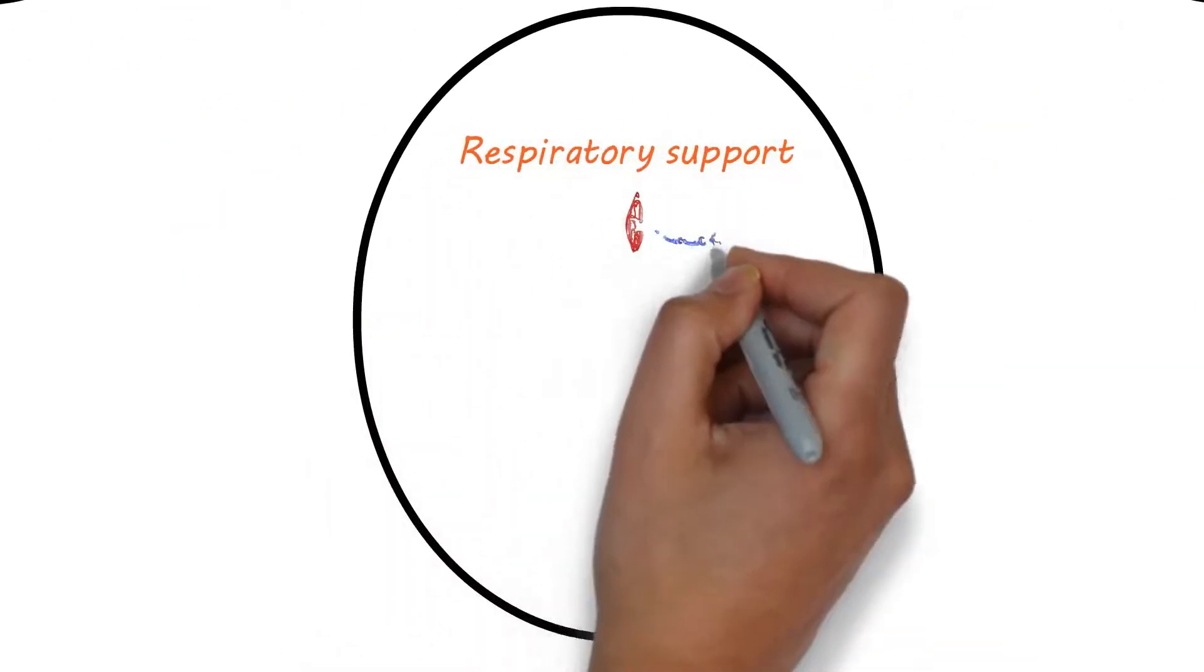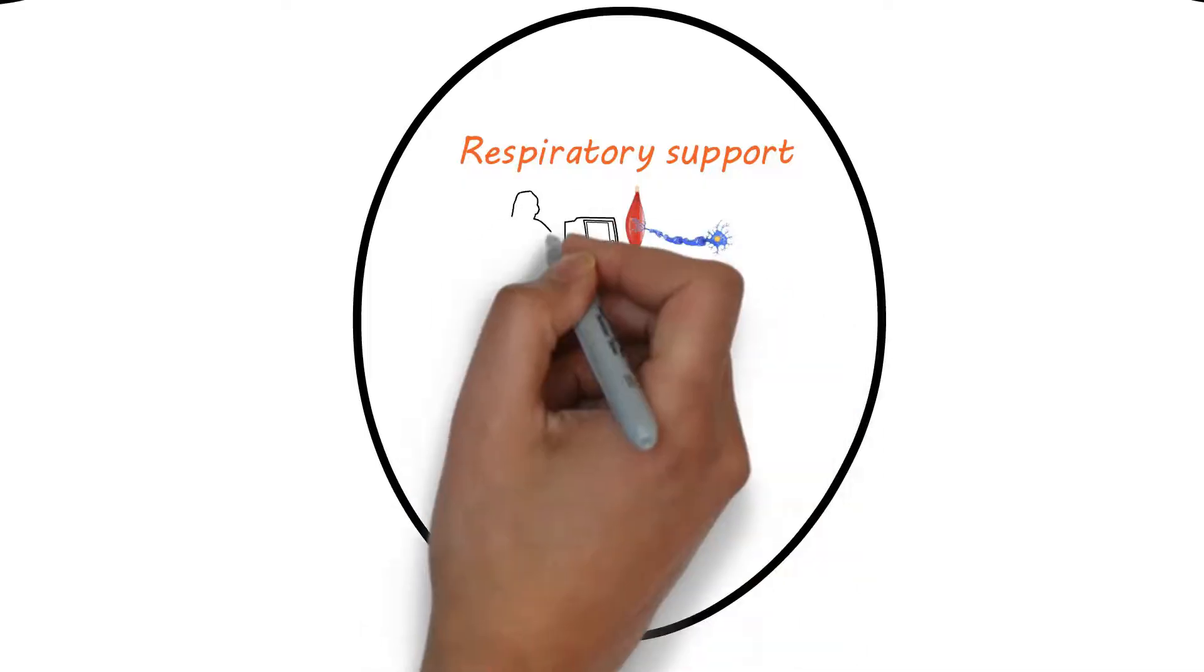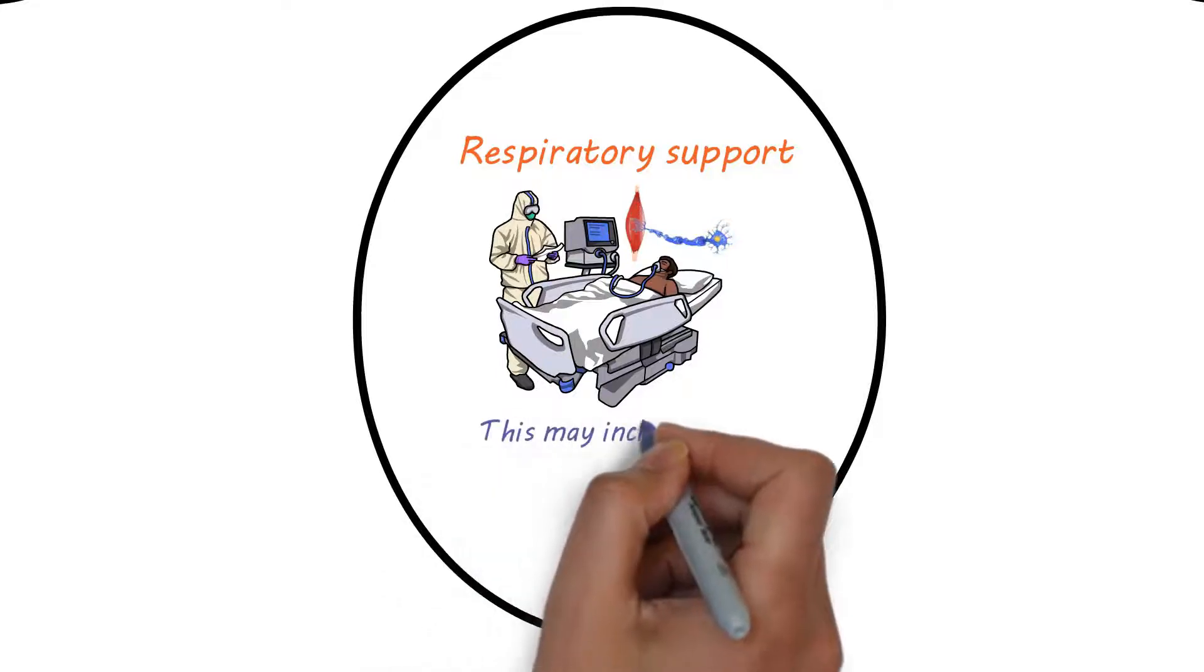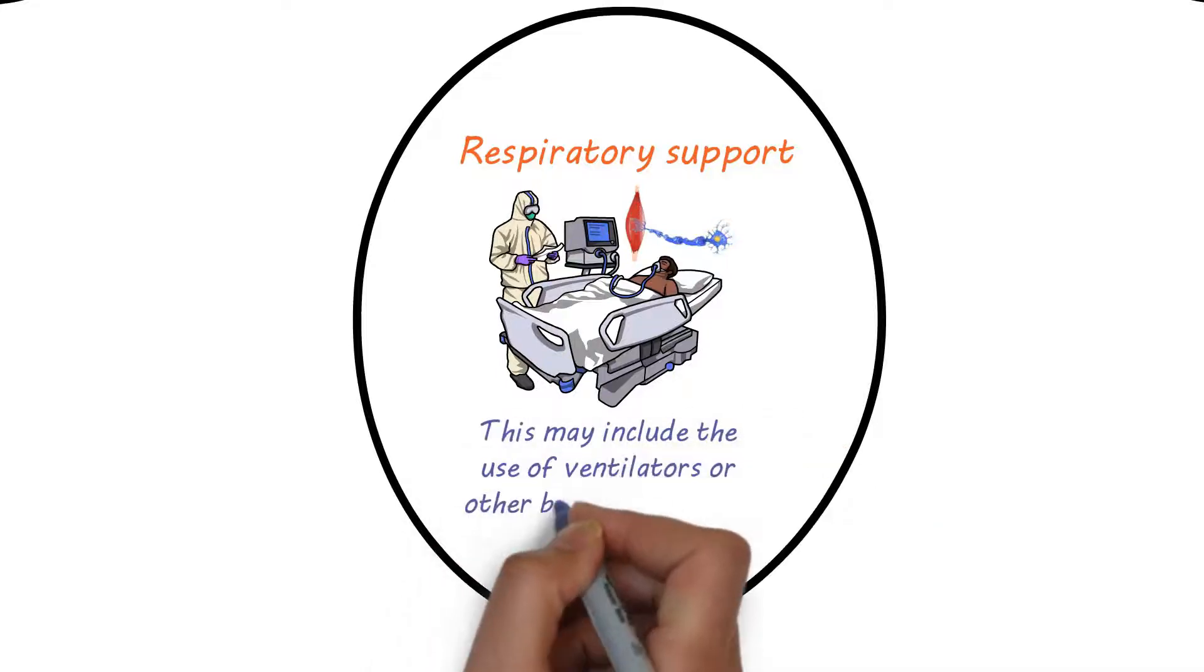Respiratory Support. As the disease progresses, respiratory support may be needed to help individuals with motor neuron disease breathe more comfortably. This may include the use of ventilators or other breathing devices.